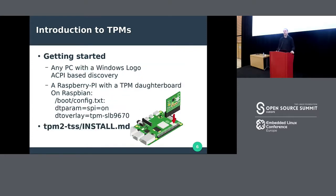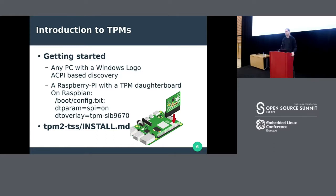If you want to get started with TPMs, you just take whatever laptop or desktop you have. The TPM is automatically discovered via the ACPI tables by the kernel, and you already have a /dev/tpm0 device and can just use our software. You might have to activate it in BIOS depending on your specific device. Or if you like to tinker with Raspberry Pis, there are daughterboards available, and Raspbian now has TPM support — just change two lines in config.txt and follow the install instructions from the upstream projects.